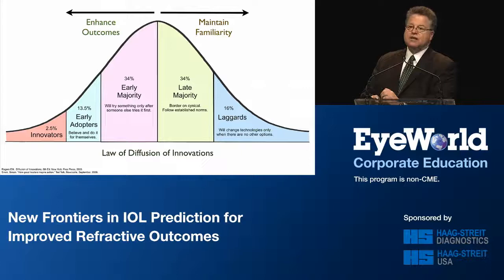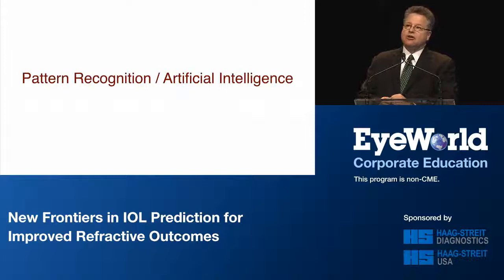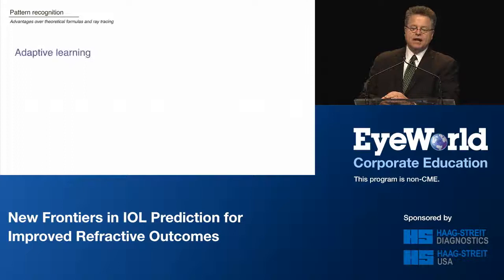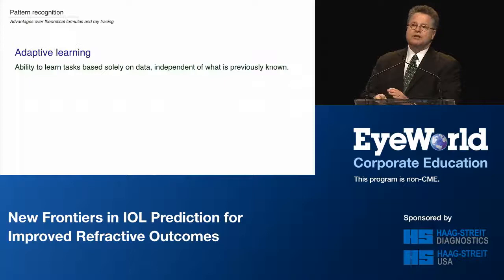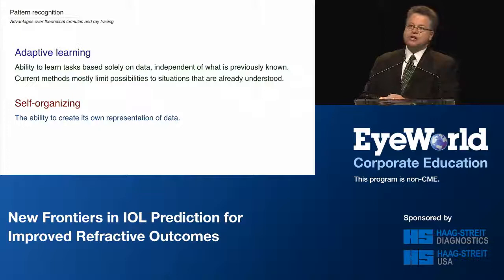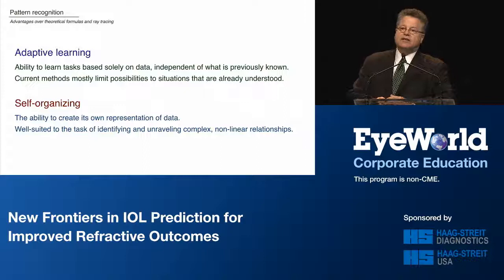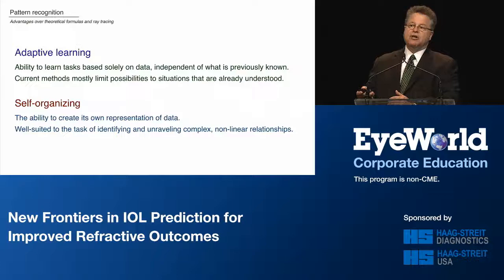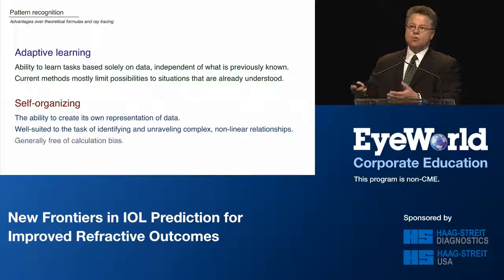We're going to talk about pattern recognition and artificial intelligence — totally different from anything we've ever used in ophthalmology. The advantage of pattern recognition is adaptive learning: it's based on data only, independent of what was previously known. It's self-organizing and well-suited to unraveling complex nonlinear relationships. Think about the human eye: for an axial length of 26.5mm, the number of combinations of central corneal power, anterior chamber depth, lens thickness, and white-to-white is astronomical.